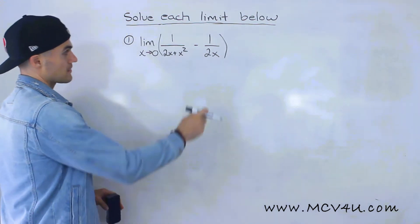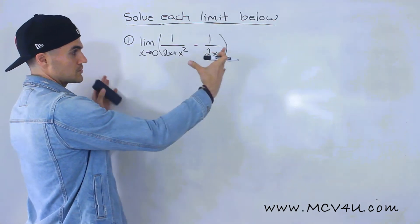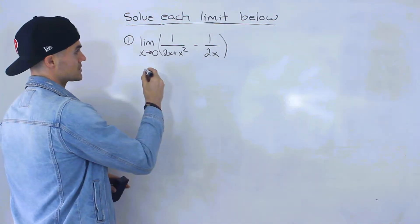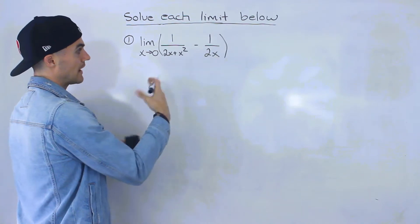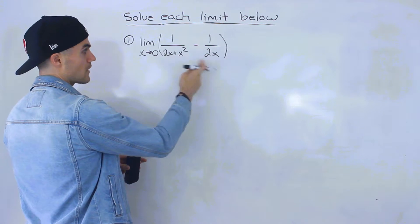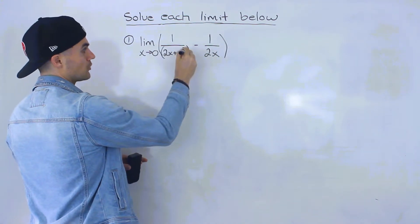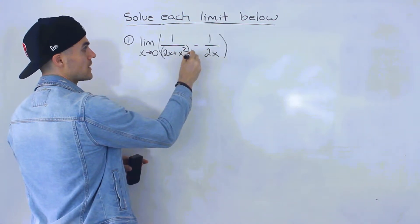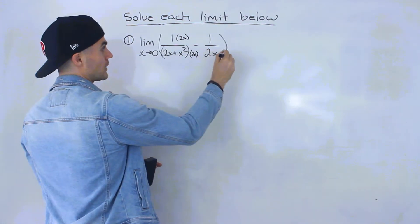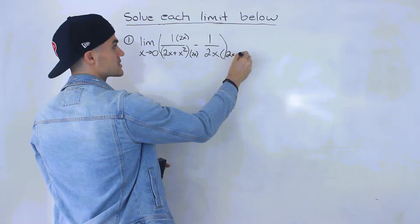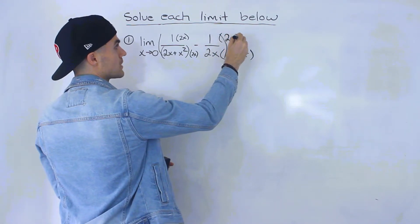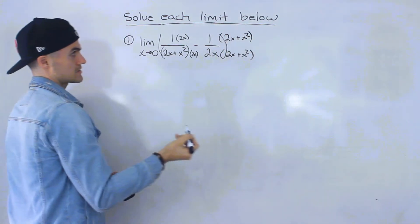For the first method, what we can do is combine these two fractions. To combine them we need a common denominator because we're subtracting two fractions. So we can multiply the first fraction by 2x on top and bottom, and multiply the second by 2x plus x squared on top and bottom.